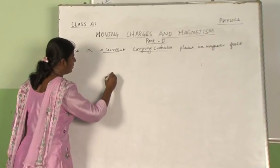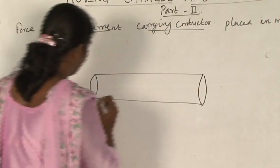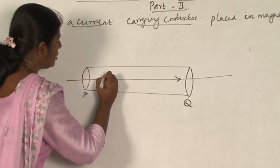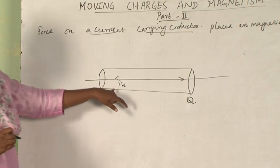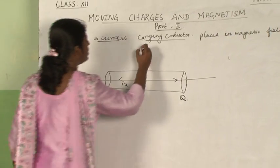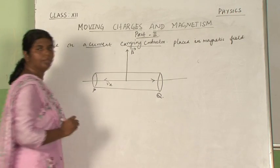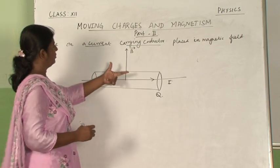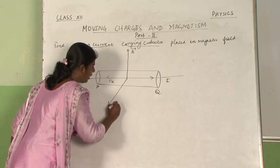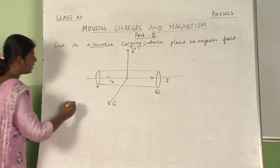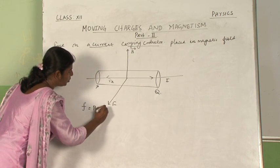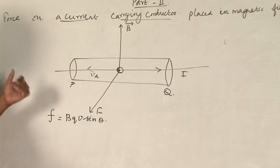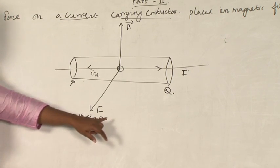Consider a current carrying conductor PQ kept in a magnetic field B. Let this be the current direction — the electrons will drift in this direction. Let Vd be the drift velocity of the electrons, and let this be your magnetic field. Now apply Fleming's left hand rule and you will get the force F. We have already learnt F is equal to BQV sin θ. The charge is moving in this direction, I is the current, and small f is equal to BQV sin θ.